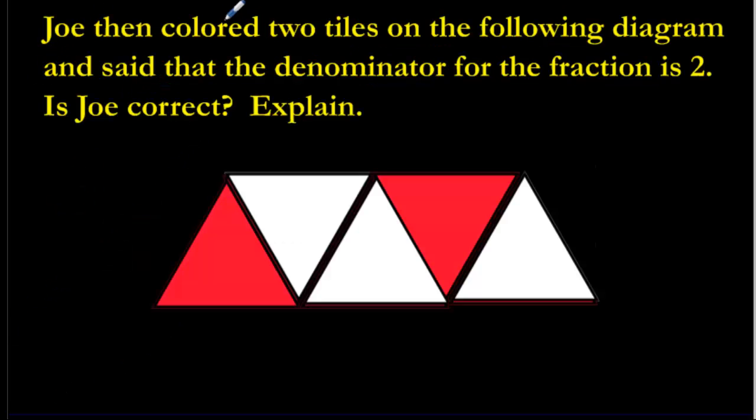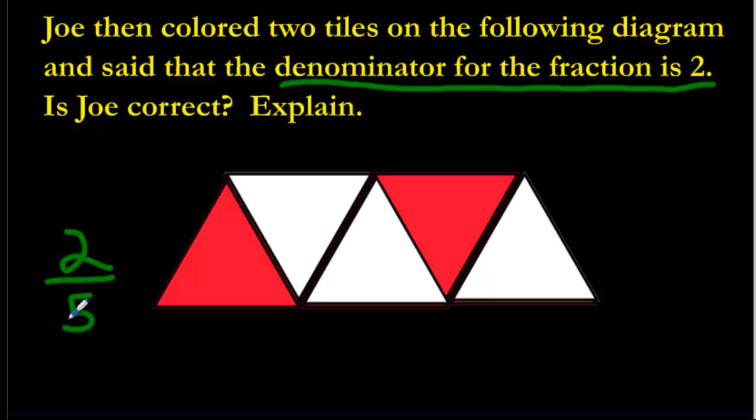So Joe tries again. He colors two tiles on the following diagram and said that the denominator for the fraction is two. Is Joe correct? So what did you do here? Joe colored two tiles. He said the denominator is two. Well, denominator is going to be how many we have all together. We have one, two, three, four, five. That's the denominator. He chose two. So we write that on the top and we have two over five. That's what Joe should have written down. He got it backwards again.